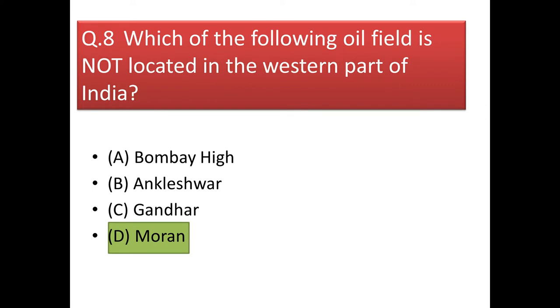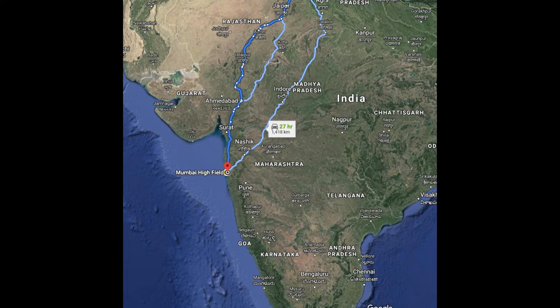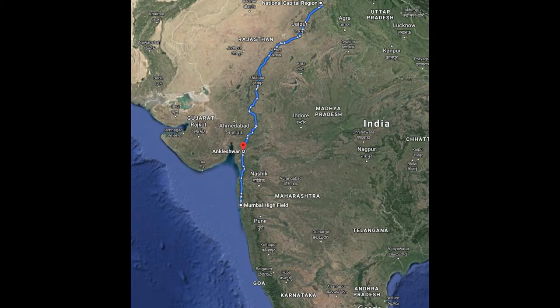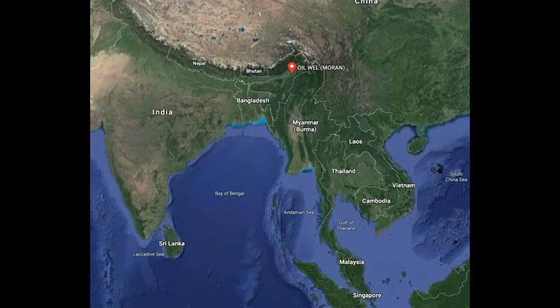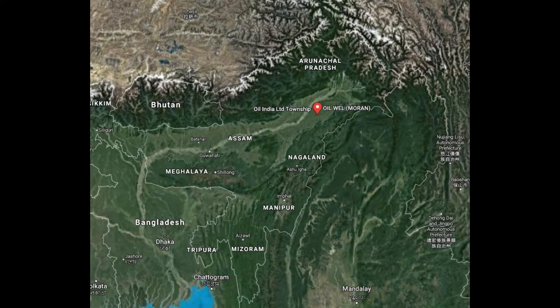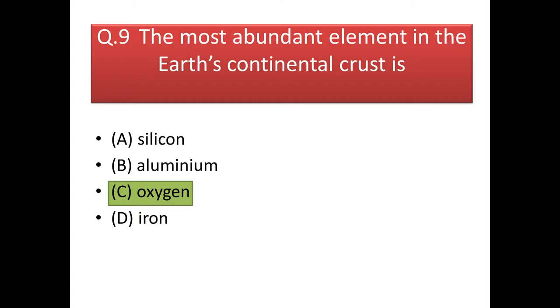Next question: which of the following oil fields is not located in the western part of India? Bombay High, Ankleshwar, and Gandhar are all in western India. The only oil field that is Moran is in Assam, which is not located in the western part of India.